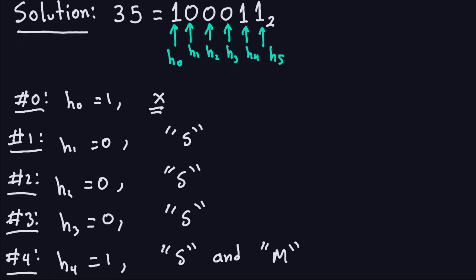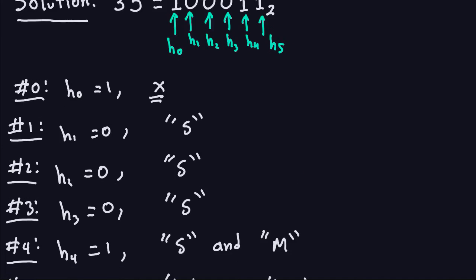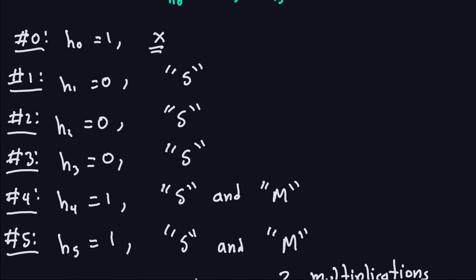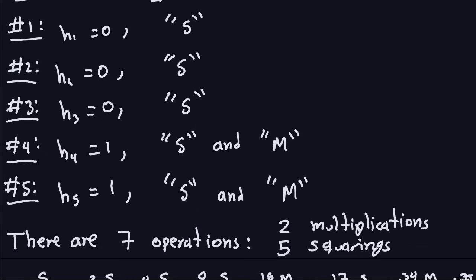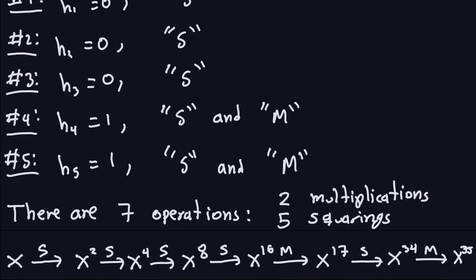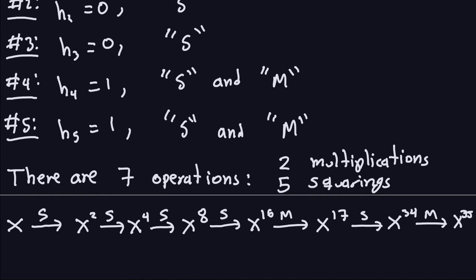So for h4 and h5: h4 is 1, so I square and multiply, and then because h5 is also a 1, I square and multiply again. If you count the total number of operations, there are seven operations — two of them are multiplications and five are squarings.